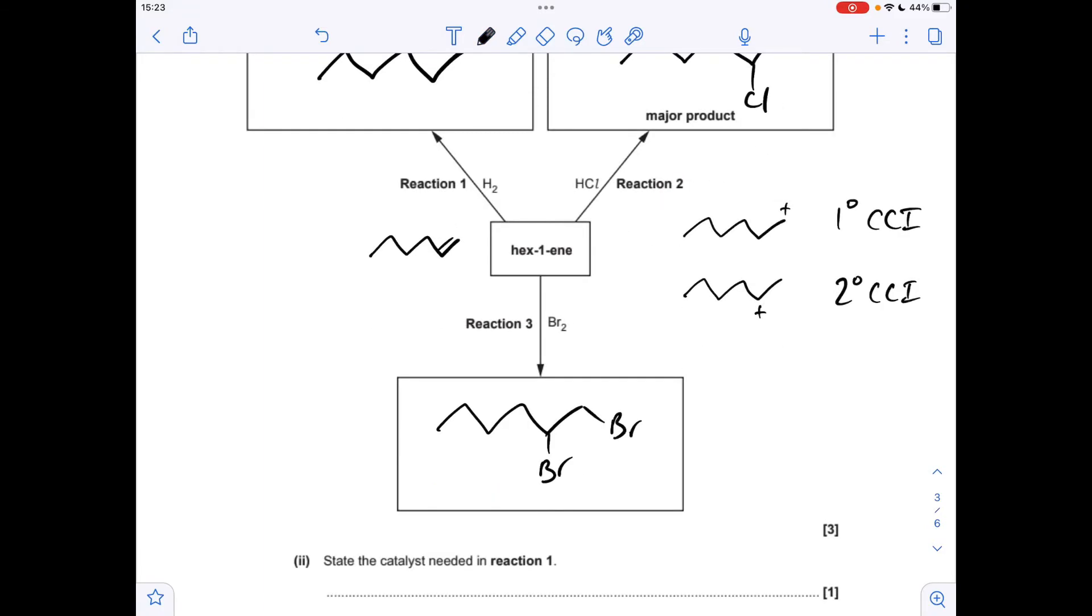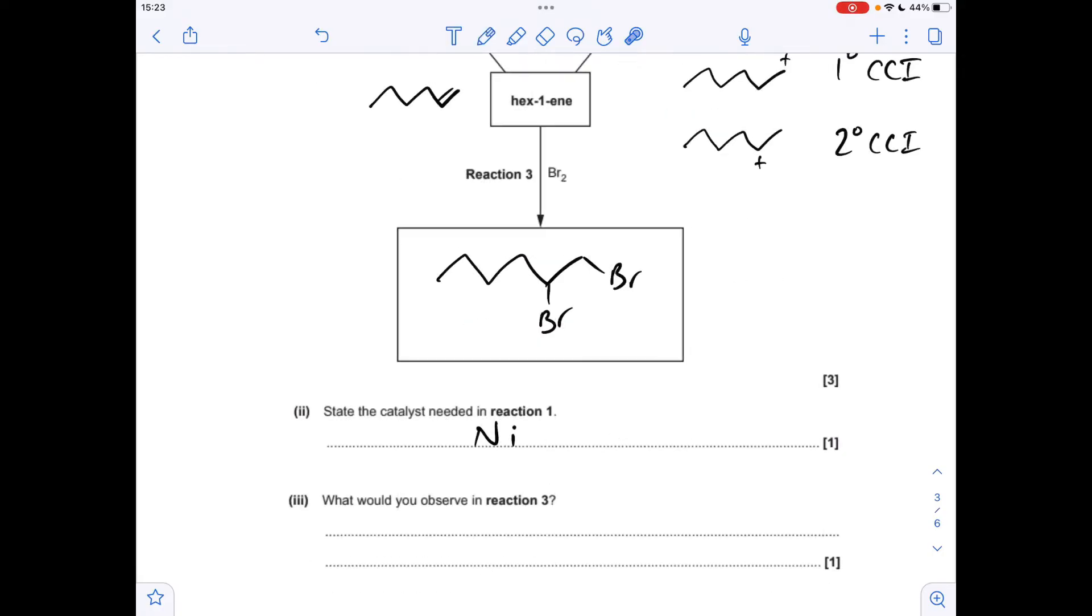For the third one we're putting the bromines across the double bond. The catalyst needed for reaction 1, the hydrogenation reaction, is a nickel catalyst. And for reaction 3, what would we observe? We're going to see the bromine lose its orange color, so I would write the bromine's decolorized.